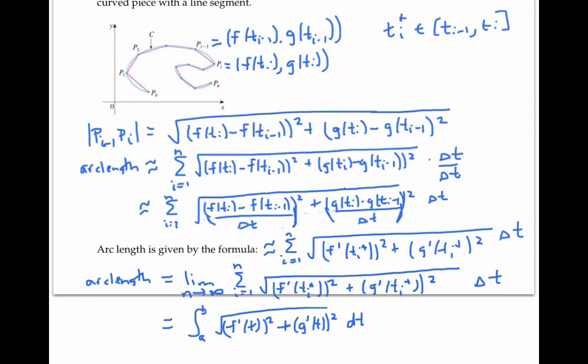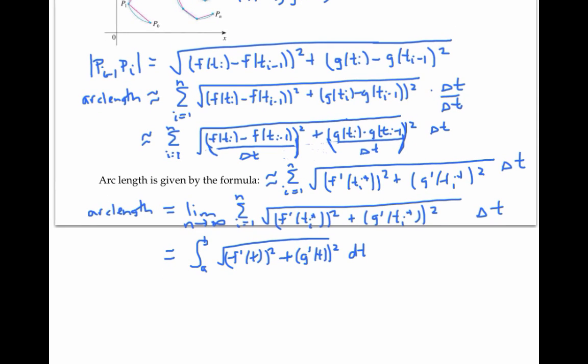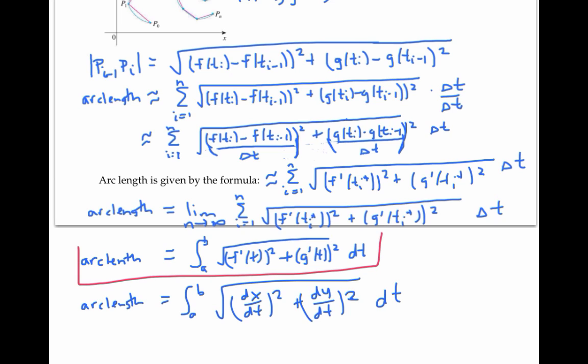This arc length formula has an alternative form, which is the integral from a to b of the square root of dx dt squared plus dy dt squared dt. And these are my two versions of this very useful formula for arc length.